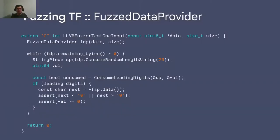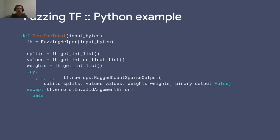Here is an example of FuzzedDataProvider, which is what we use mostly in TensorFlow. We initialize it with the data buffer and its size, then as long as we have bytes remaining, we read components of it, call our API — in this case ConsumeLeadingDigits — and check some property on the output. We can also use FuzzedDataProvider in Python, hidden under a fuzzing helper class, because in most cases our API receives an integer list, a float list, or a list of tensors. All of this has been packaged in the fuzzing helper so users need to write as little code as possible to fuzz a specific operation.